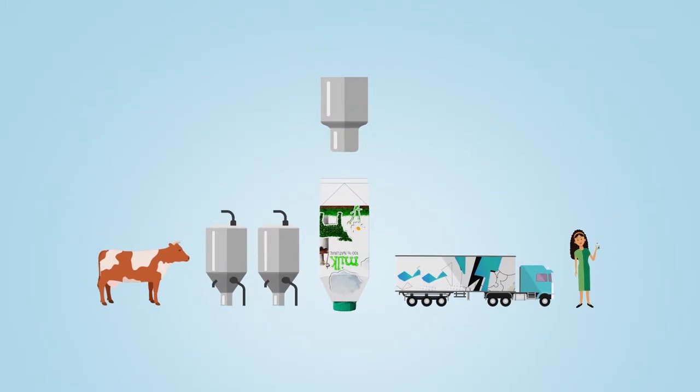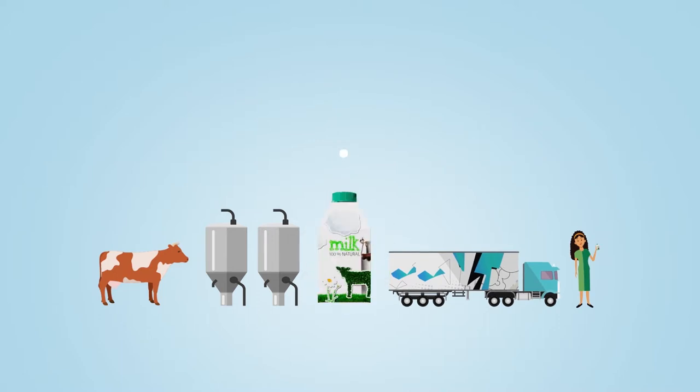With Track and Trace transparency, producers get full visibility of a product in the entire value chain.